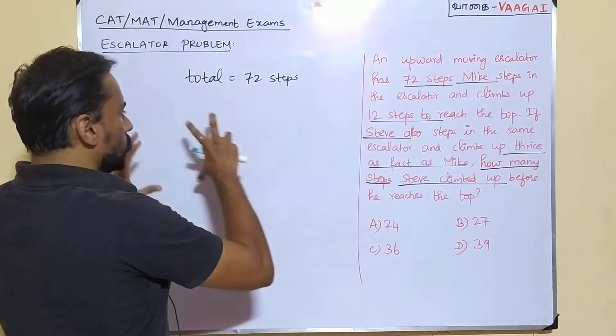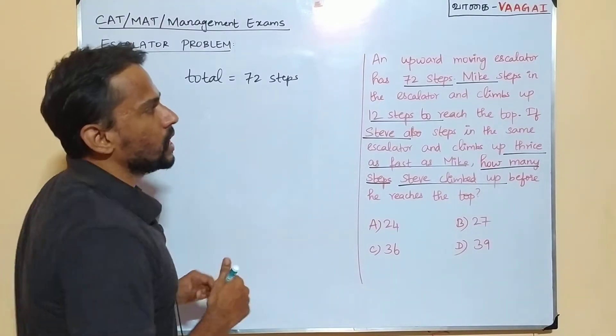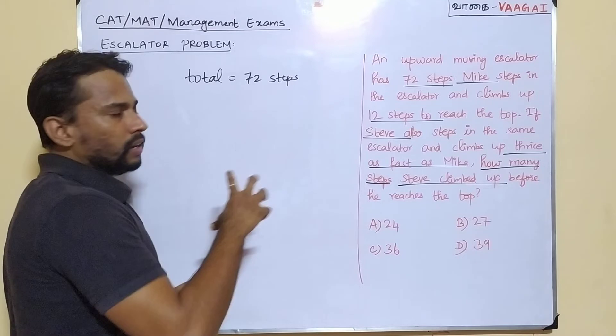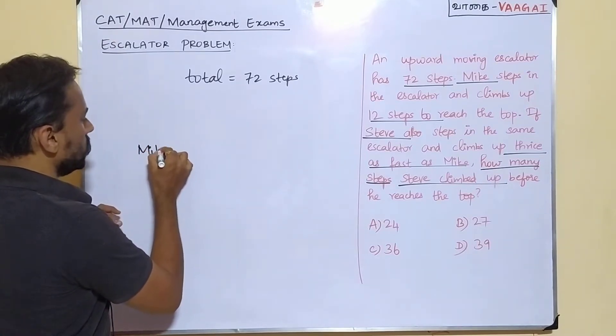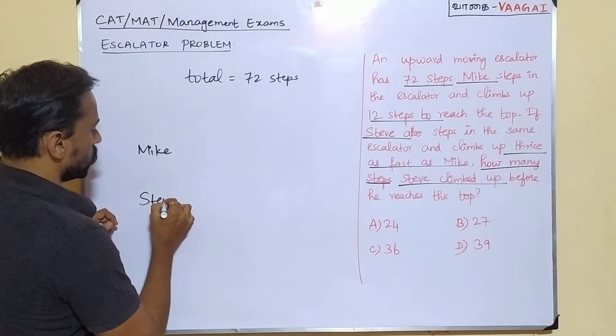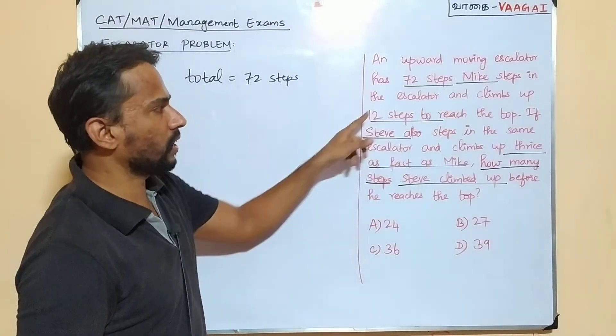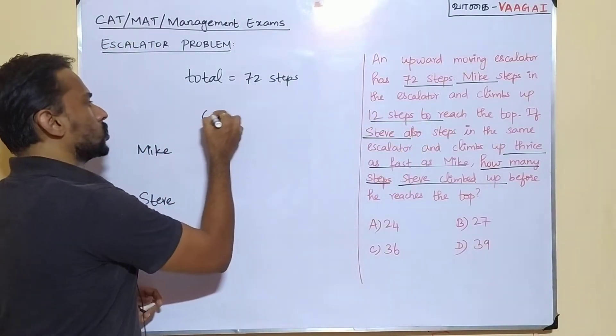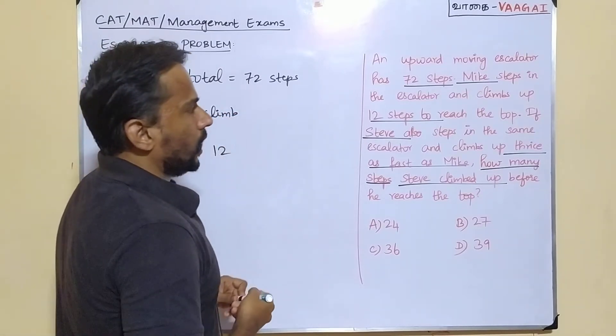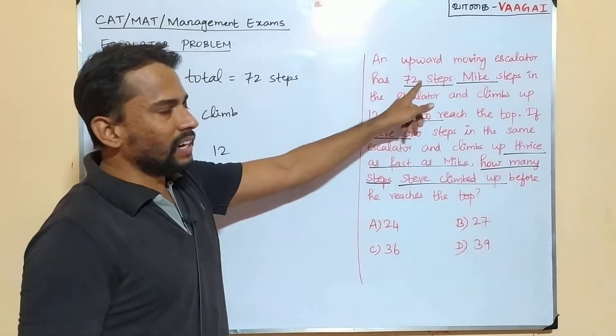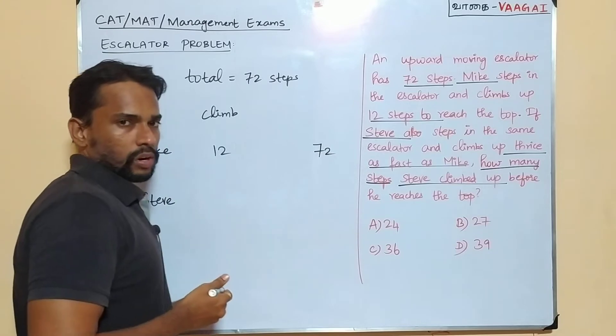First of all, I'll try to make a structure so that it would be very easy for us to travel and solve the problem. I'll make a kind of table here. So here there are two people here. There is Mike. Mike is the first person and there's another person Steve. So Mike can climb how many steps? Mike, it is given, he can climb 12 steps. Mike is going to climb 12 steps. And out of how many steps? See the escalator has got a total of 72 steps, let's note it total is 72.